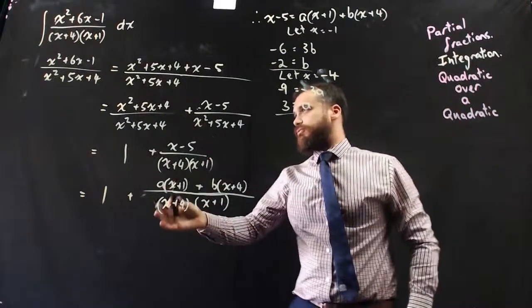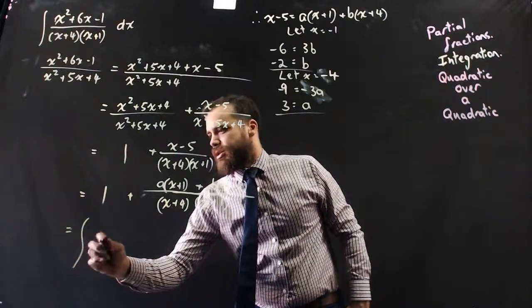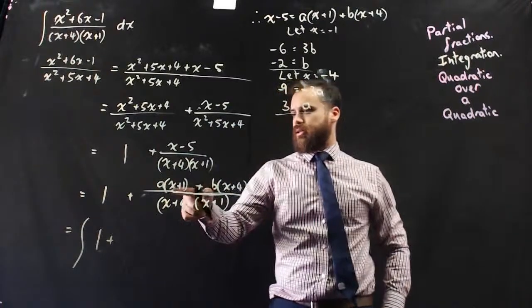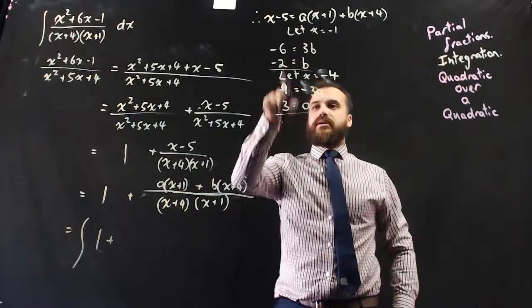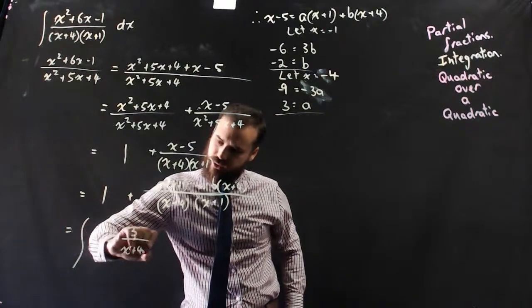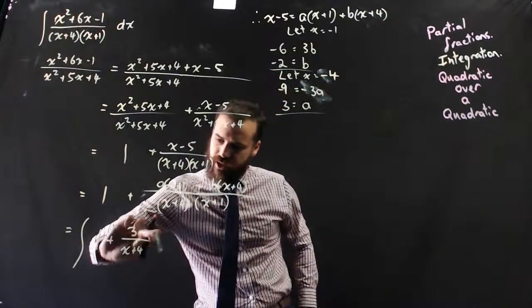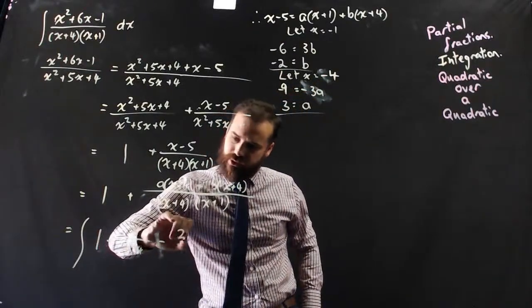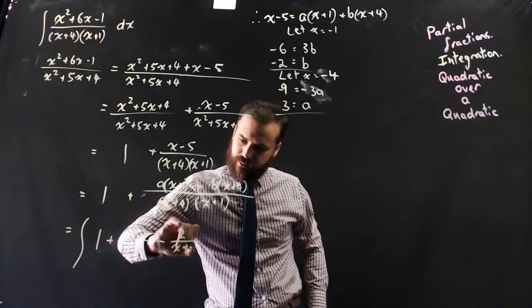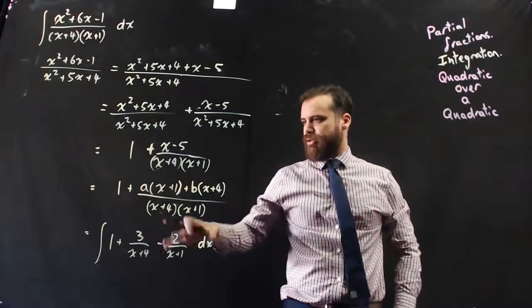So now, coming back to our integral, what we're really finding is the integral of 1 plus 3 over (x plus 4) plus negative 2 over (x plus 1) with respect to x. And then it's really just integrating that.